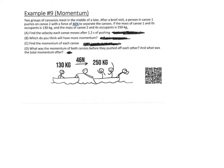What we know is we've got a force of 46 newtons. Remember, momentum is force times time. We've got a time of 1.2 seconds, so if we take that 46 and multiply it by 1.2, we get — what do we get? 55.2.